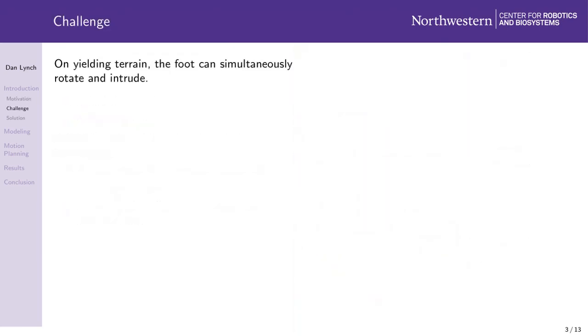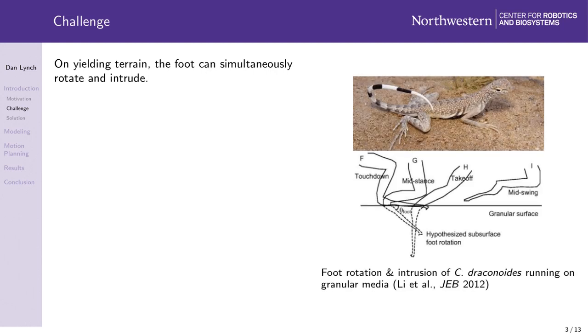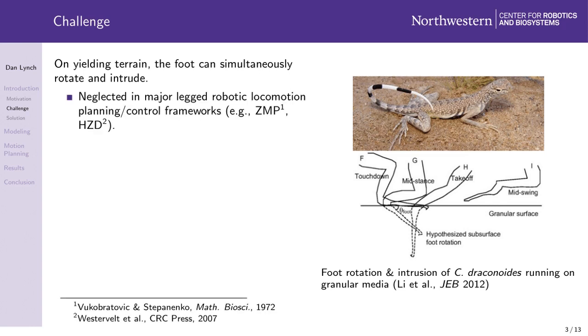One particular challenge associated with walking or running on yielding terrain is that the foot can rotate while intruding. The zebra-tailed lizard shown on the right gives an example of this. This kind of stance phase foot motion is neglected in popular planning and control frameworks such as zero-moment point control and hybrid zero-dynamics, both of which arose from studying walking and running on hard ground.